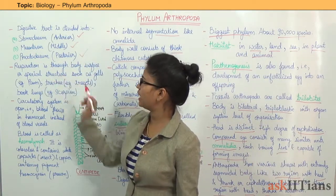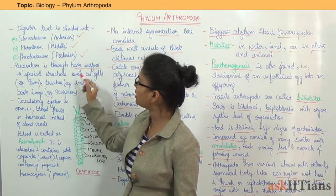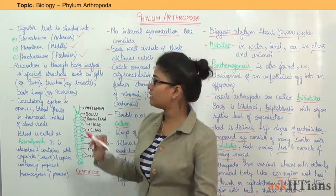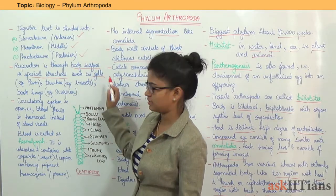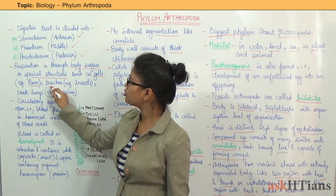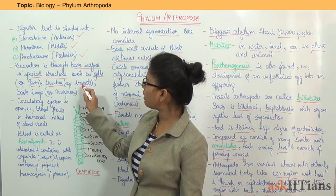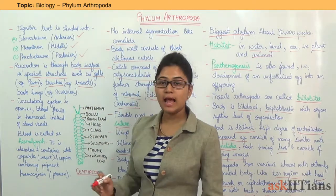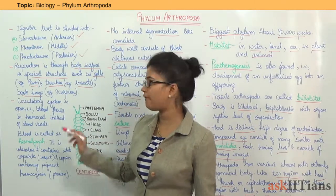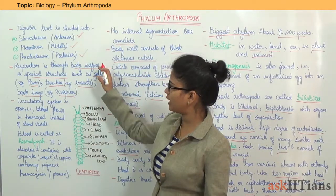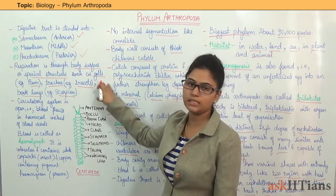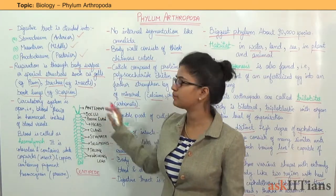Respiration is through the body surface or through special structures like gills, which are found in prawns; trachea, which are found in insects; and book lungs, which are found in scorpions.